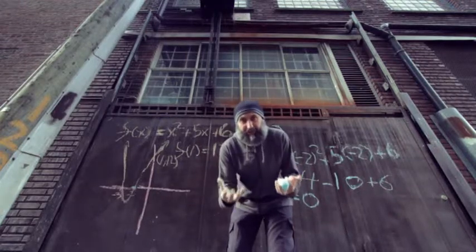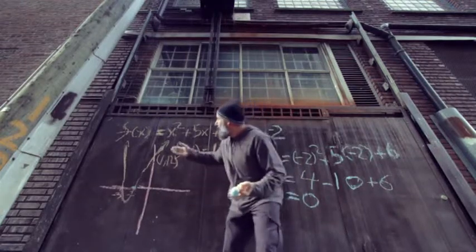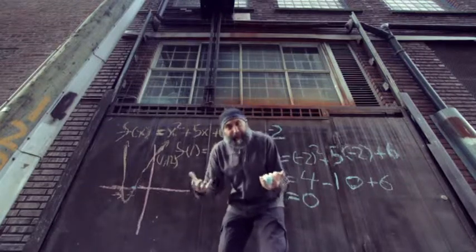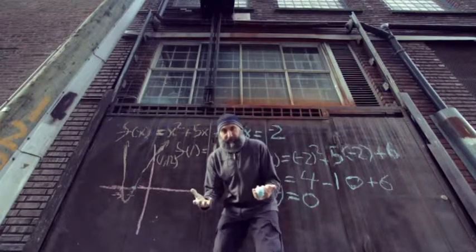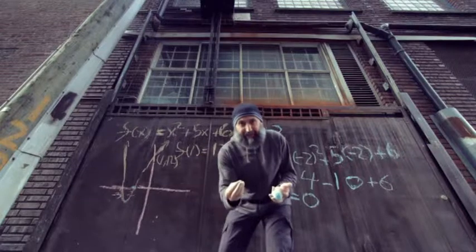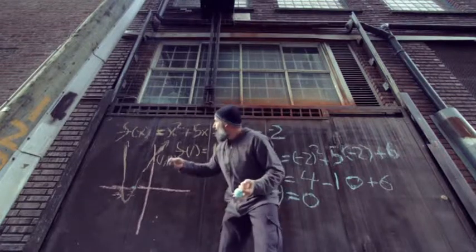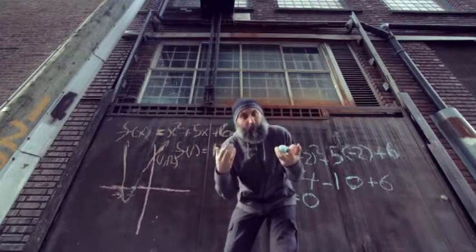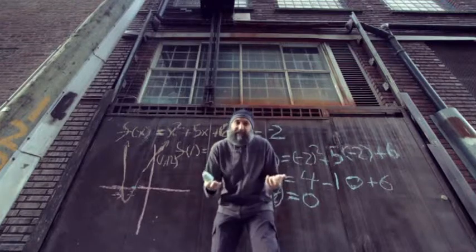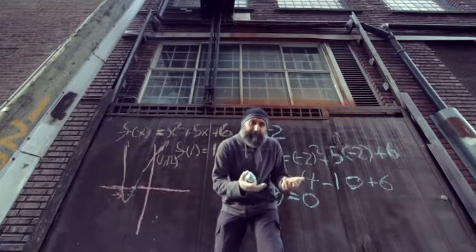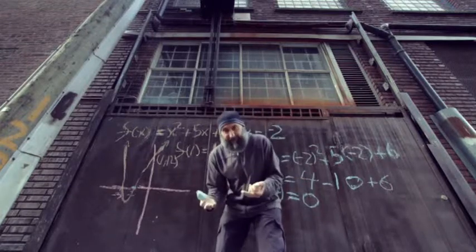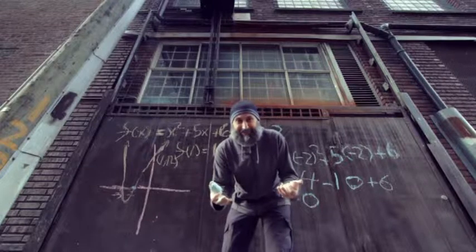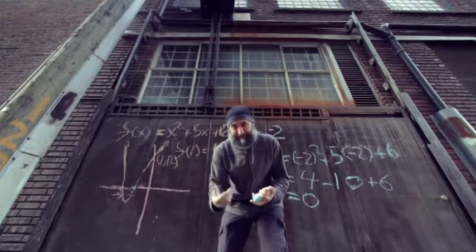And that is all the remainder theorem and the factor theorem tell us. They're basically tools we use to find out where we are on a function, and they're pretty powerful tools. All you do is plug in an x-value, find out what your remainder is, and that is your y. That's the remainder theorem and the factor theorem. Hope you guys enjoyed this series — I'll see you in the next video.